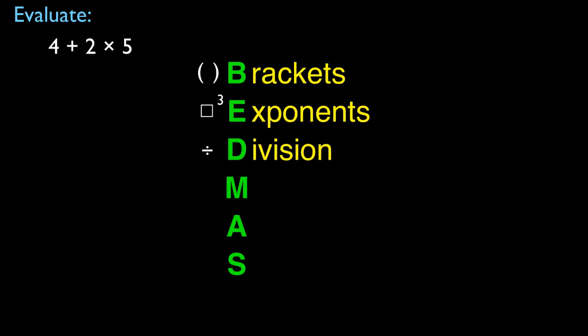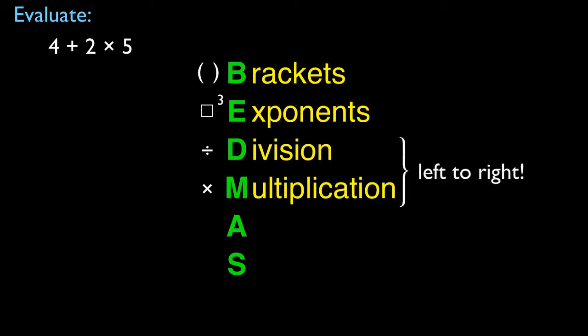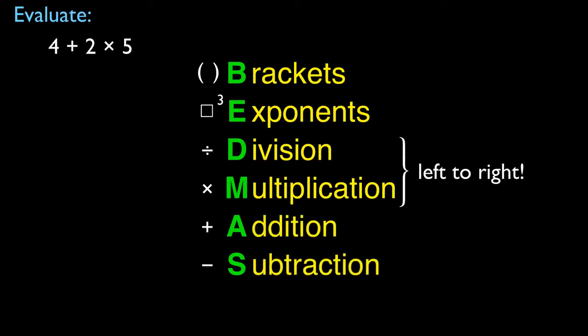D stands for division and M stands for multiplication. These are performed after brackets and exponents. But the interesting part is division doesn't necessarily come before multiplication — they're actually ranked the same level. When you have both, you perform them left to right. Then A and S — addition and subtraction — are also ranked the same, and are likewise performed left to right depending on where they appear in your equation.